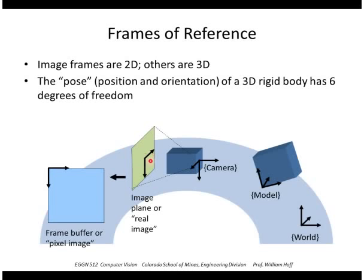The image is projected onto a two-dimensional image plane — like the CCD plane — and then digitized to an image buffer or frame buffer, a pixel image with the coordinate system typically in the upper left-hand corner. We'll be discussing the whole process of how, given a frame buffer, you determine the position of a model in the world.